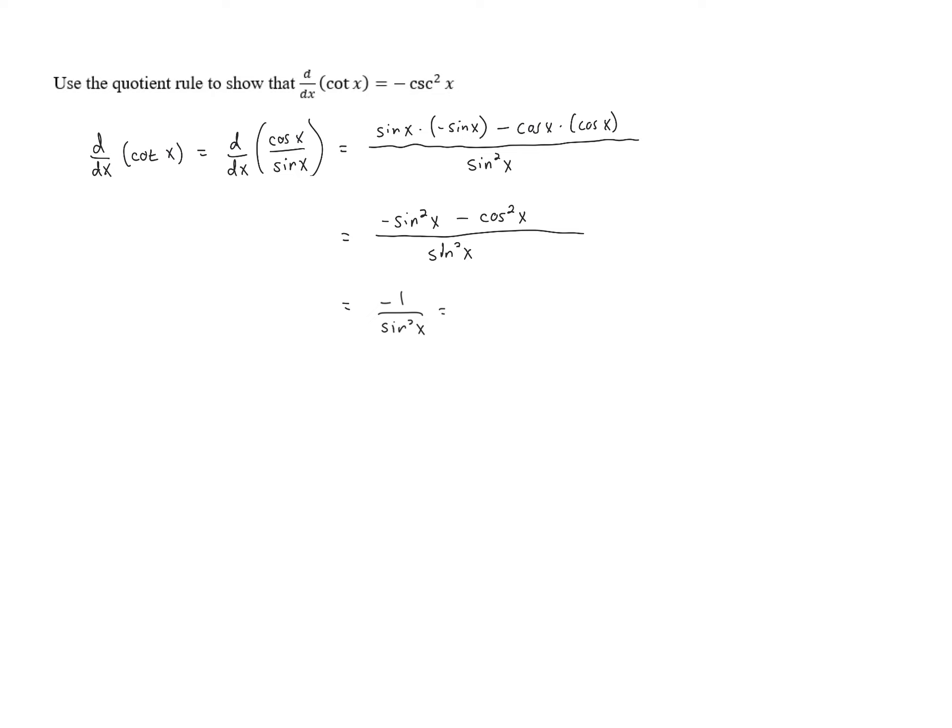And we know that the inverse of sine is cosecant. So we pull that negative out front, and because it's the inverse of sine squared, it's going to be cosecant squared of x with that negative out front. And we have shown that the derivative of cotangent of x is negative cosecant squared of x.